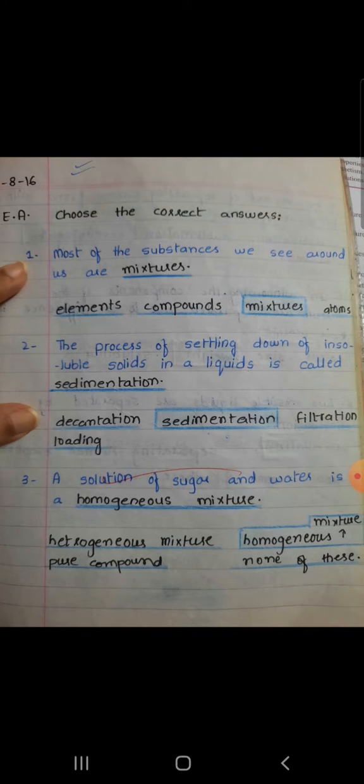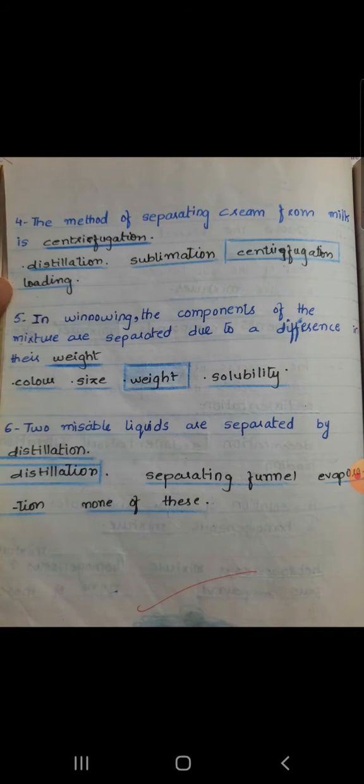of settling down of insoluble solids in a liquid is called sedimentation. Number three - a solution of sugar and water is a homogeneous mixture. Number four - the method of separating cream from milk is centrifugation. Number five - in winnowing, the components of the mixture are separated due to a difference in their weight.